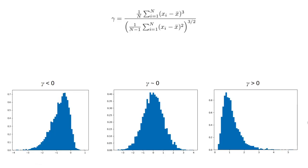We can make this more precise. A common measure of skewness is the so-called Pearson moment coefficient of skewness, usually just called skewness. It's defined by this formula.